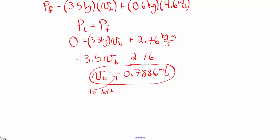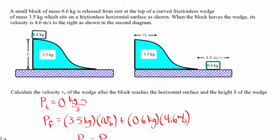The second thing we're asked for is to find what height the block started from. To solve this we're going to use conservation of energy. At the beginning, the block is sitting at the top of the ramp at height h, so we have potential energy stored in that block, and neither the block nor the wedge are moving, so the initial kinetic energy is zero.